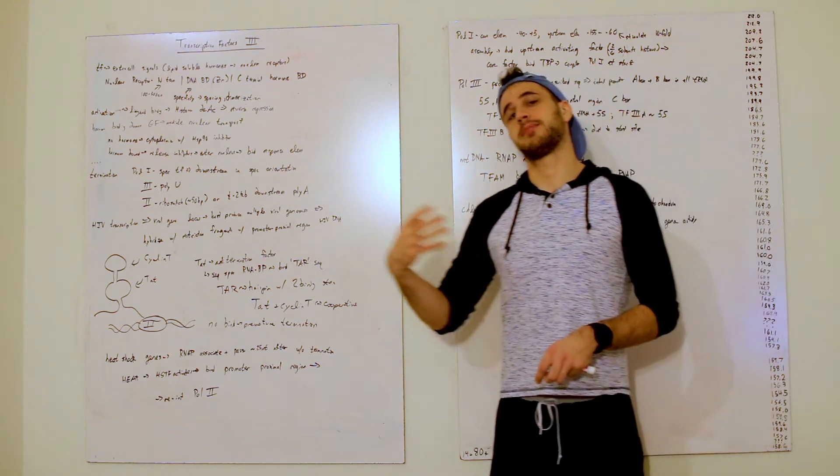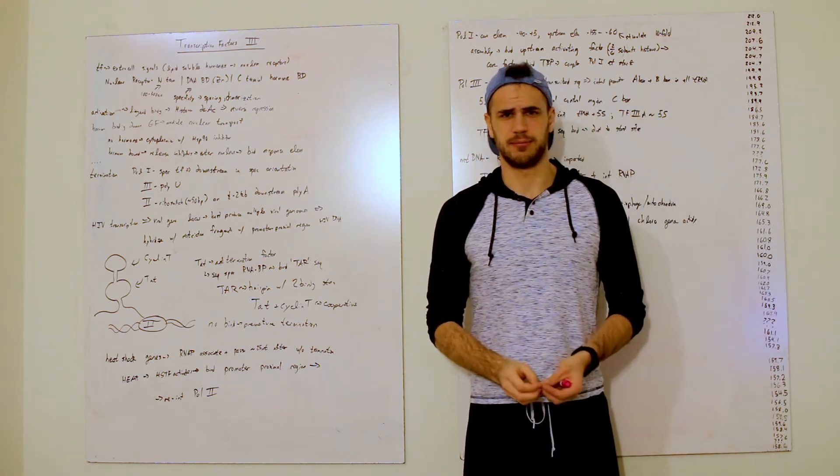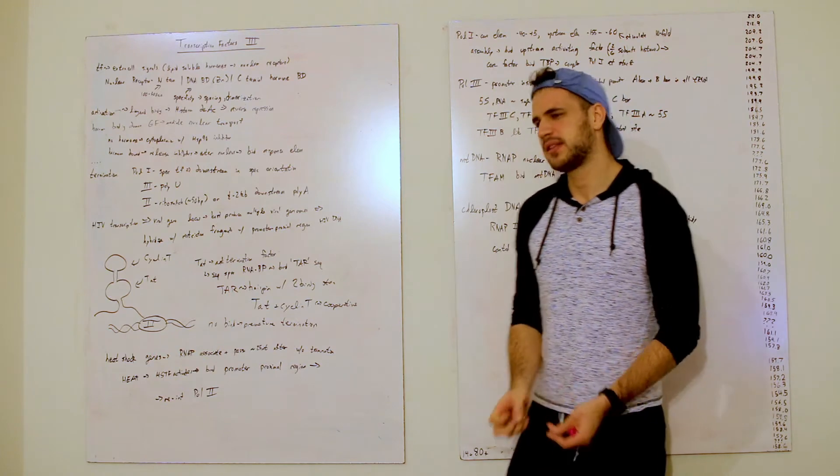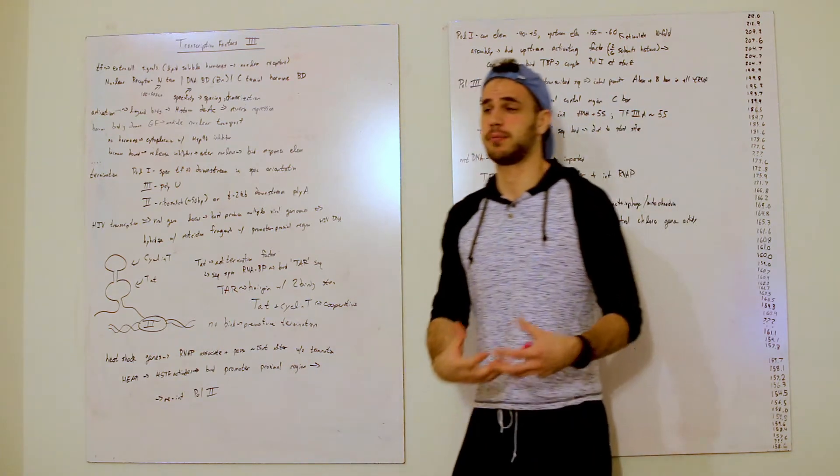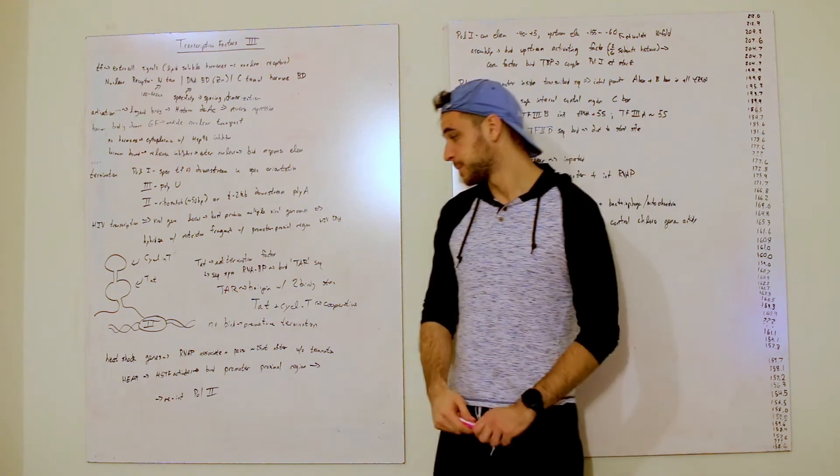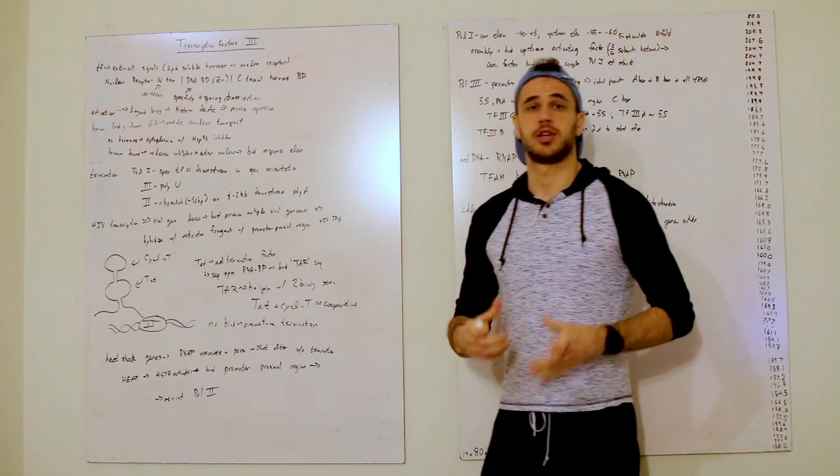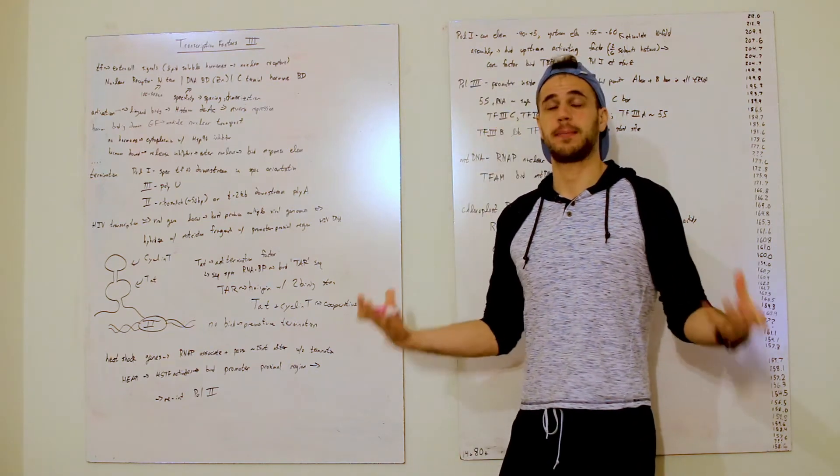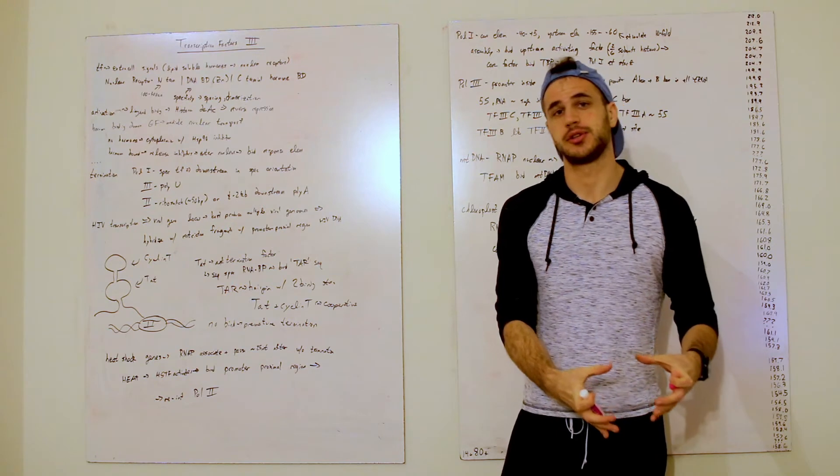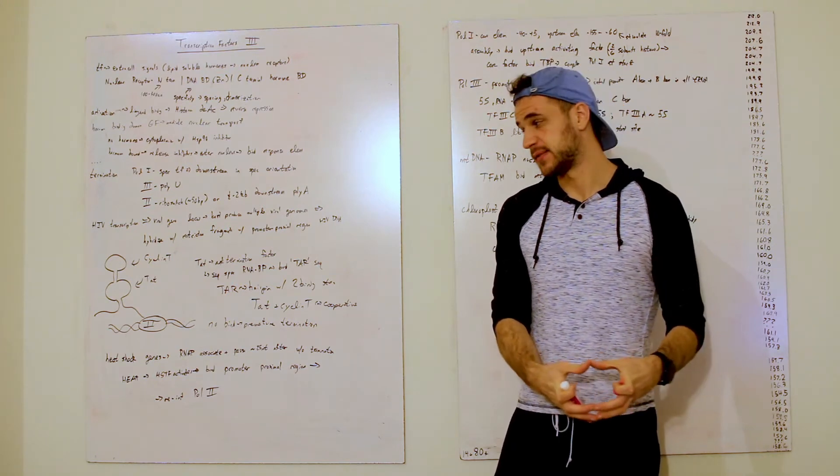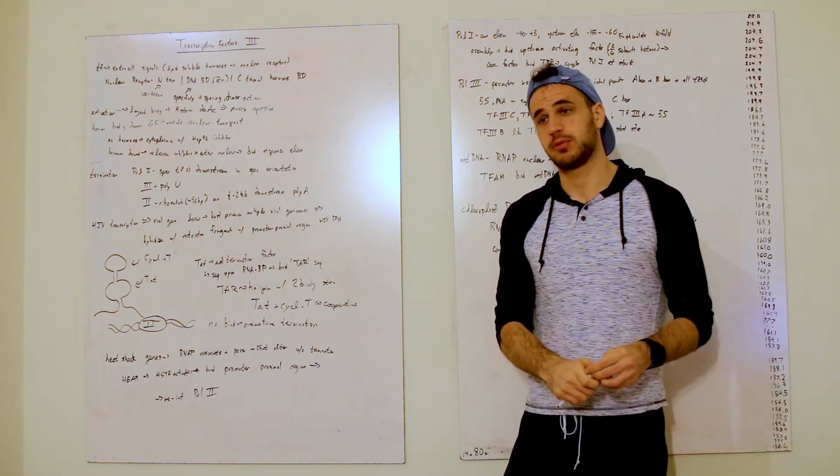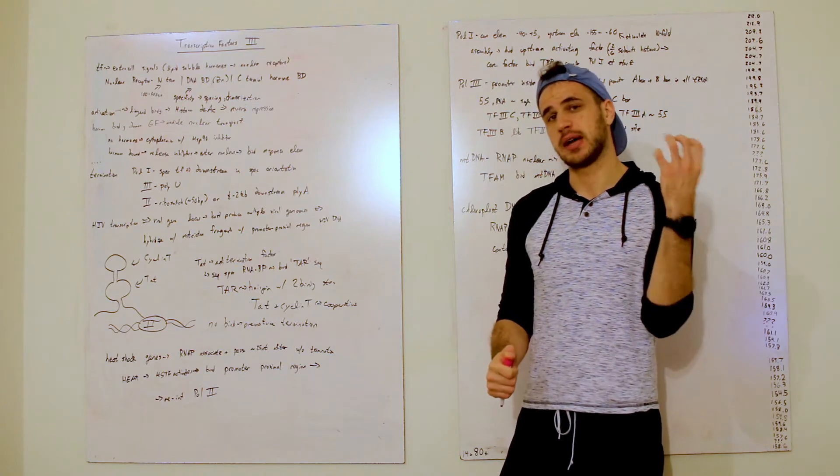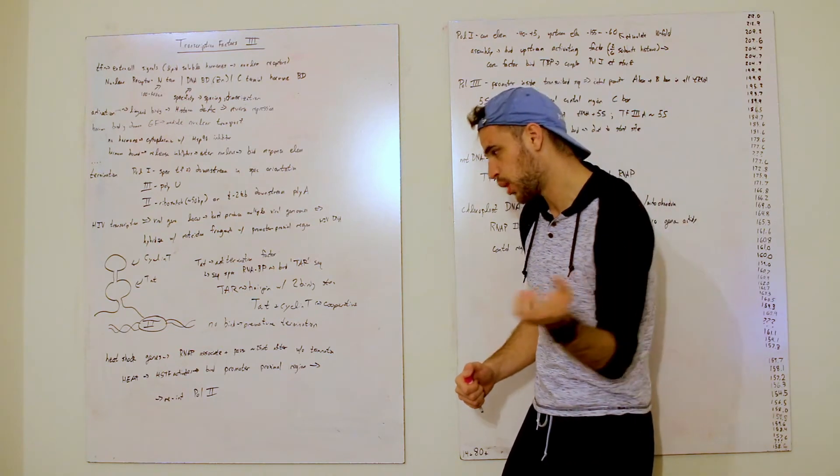So, on a completely different note, in a completely different world, we have heat shock genes. And so, these are completely different in that, what happens is you have RNA polymerase just join onto a piece of DNA. And so, this polymerase, polymerase II, is on the DNA, and it makes about 25 nucleotides.